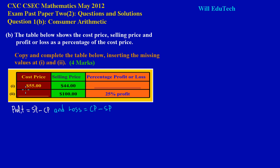Now in part 1, they have given us the cost price which is $55, and the selling price which is $44, and they are asking us to fill in the percentage profit or loss. By intuition it suggests that you have made a loss here, because if you bought something for $55 and only got $44 for it, you would have gotten less than what you bought it for — so you would have lost money on this item.